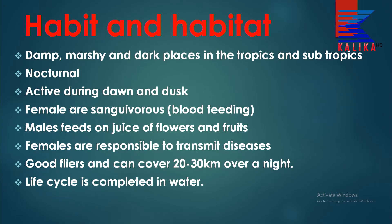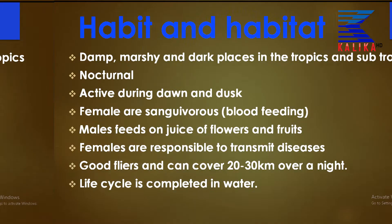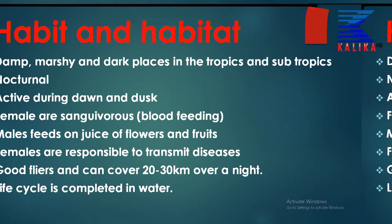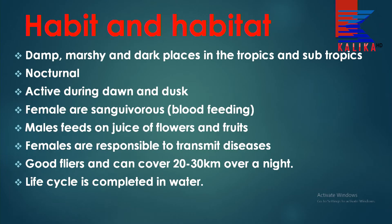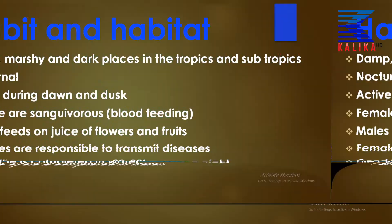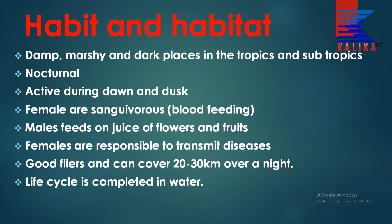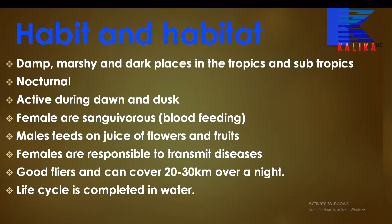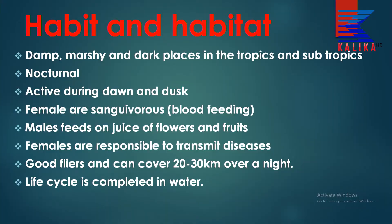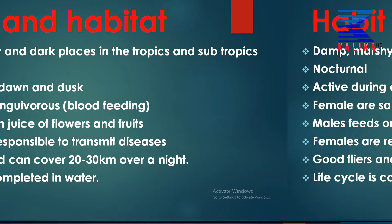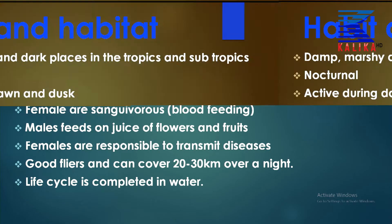Let's talk about habit and habitat. Habit means what are their typical characteristics and what do they do, and habitat means where do they live. They are commonly found in damp, marshy and dark places in the tropics and subtropics. They are nocturnal — active during the night time, and especially very active during dawn, meaning early in the morning before sunrise, and dusk, meaning just after sunset before getting dark.